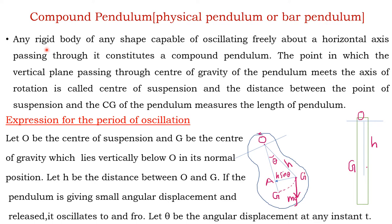A compound pendulum is a rigid body of any shape which is capable of oscillating freely about a horizontal axis passing through it. A rigid body means a body in which the distance between any two particles remains constant in time, irrespective of the external force acting on it. The point at which the vertical plane passing through the center of gravity of the pendulum meets the axis of rotation is called the center of suspension.